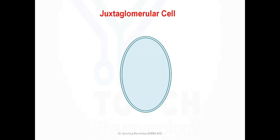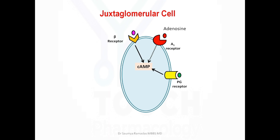Let us see what local hormones regulate renin release. Adenosine acts on its receptor by inhibiting cyclic AMP. Sympathetic overactivity increases cyclic AMP, and prostaglandin also increases cyclic AMP. An increase in cyclic AMP causes renin release. Thus, prostaglandin and beta-adrenergic stimulation cause renin release, whereas adenosine inhibits renin secretion by inhibiting cyclic AMP.